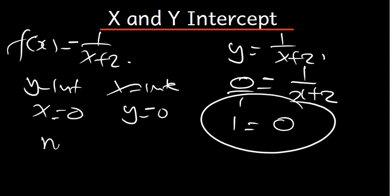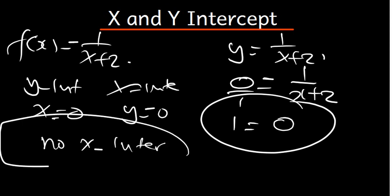So we have no x intercept. Because our goal is to find the values of x, but we're finding 0 on this side, so it doesn't make sense. So we don't have the x intercept.